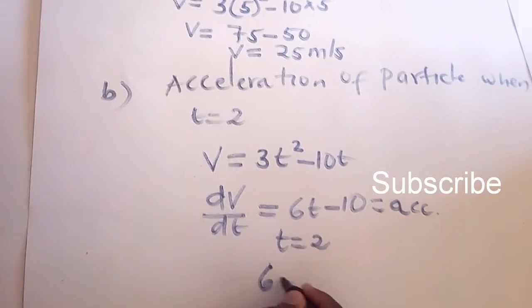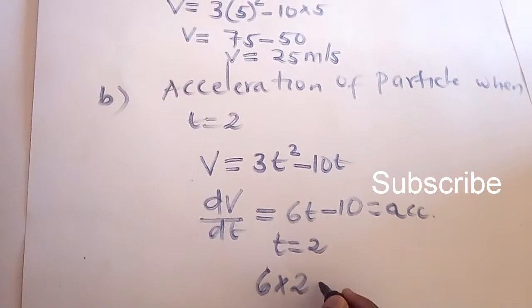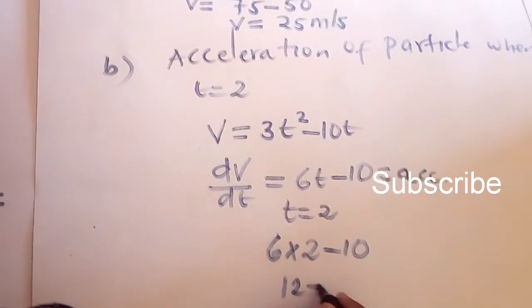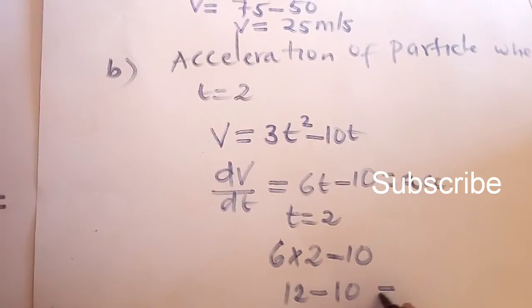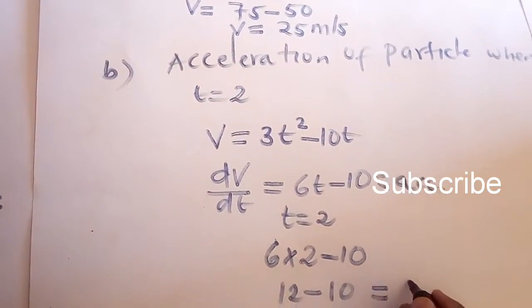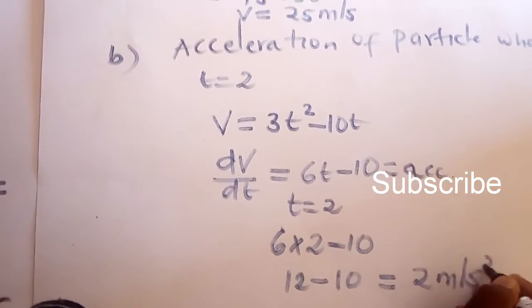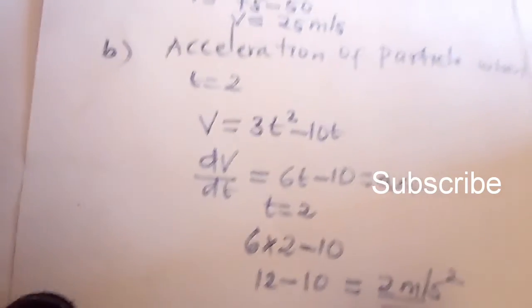Therefore, this will be 6 multiplied by 2 minus 10. This will give us 12 minus 10. Therefore, the answer is supposed to be 2 meters per second squared.